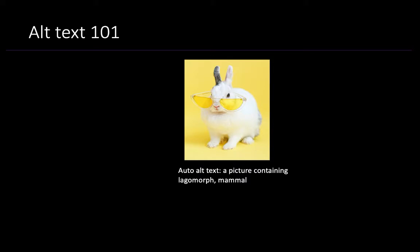Automatic alt text is alt text that is generated by an AI system. It's convenient but sometimes has quality issues. For example, the alt text for the same bunny was 'a picture containing Lagomorph Mammal.' For those of you who are wondering what a Lagomorph is — like me — it's like a super class of bunny.